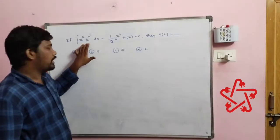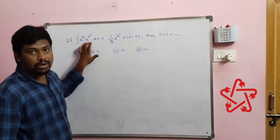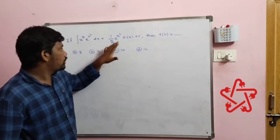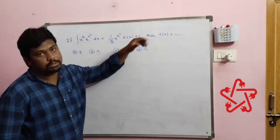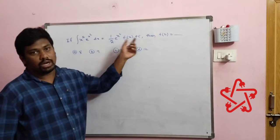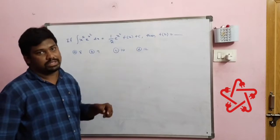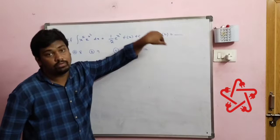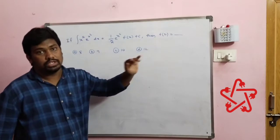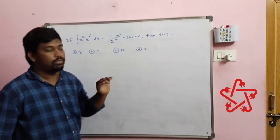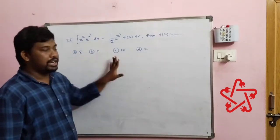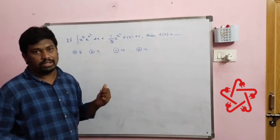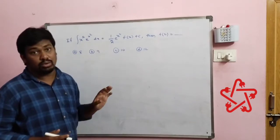If the integral of x⁵ · eˣ² dx is equal to half into eˣ² · f(x) plus c, he didn't mention what the remaining function is — we have to find it. He asked us to find f(2). Instead of finding f(x), we need to find f(2). The options given are 8, 9, and 12.